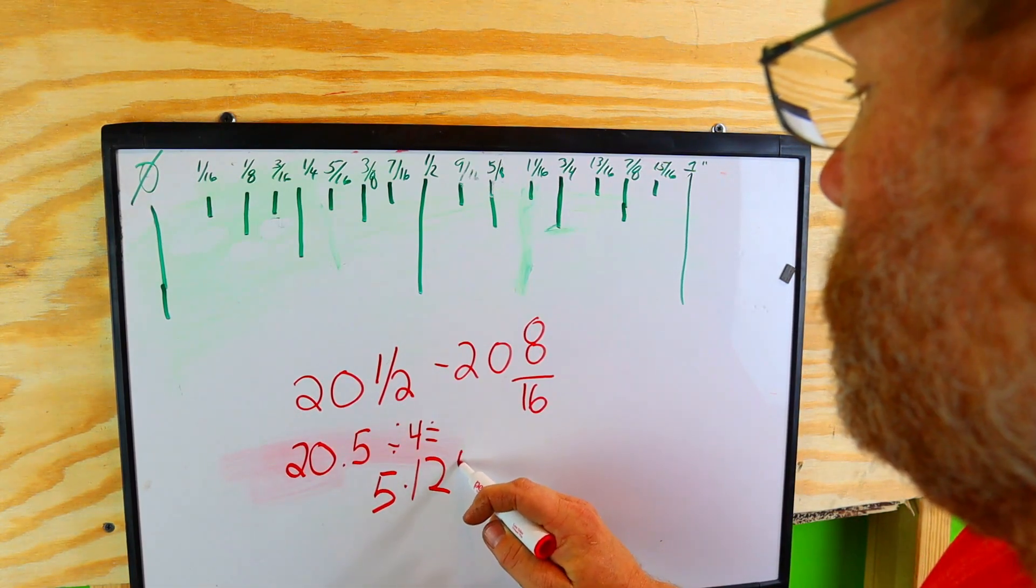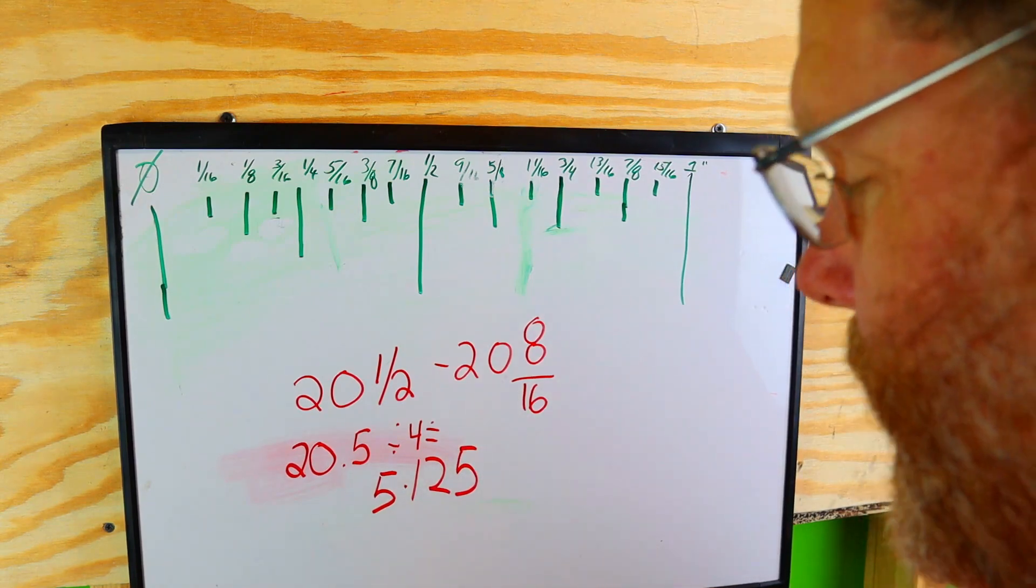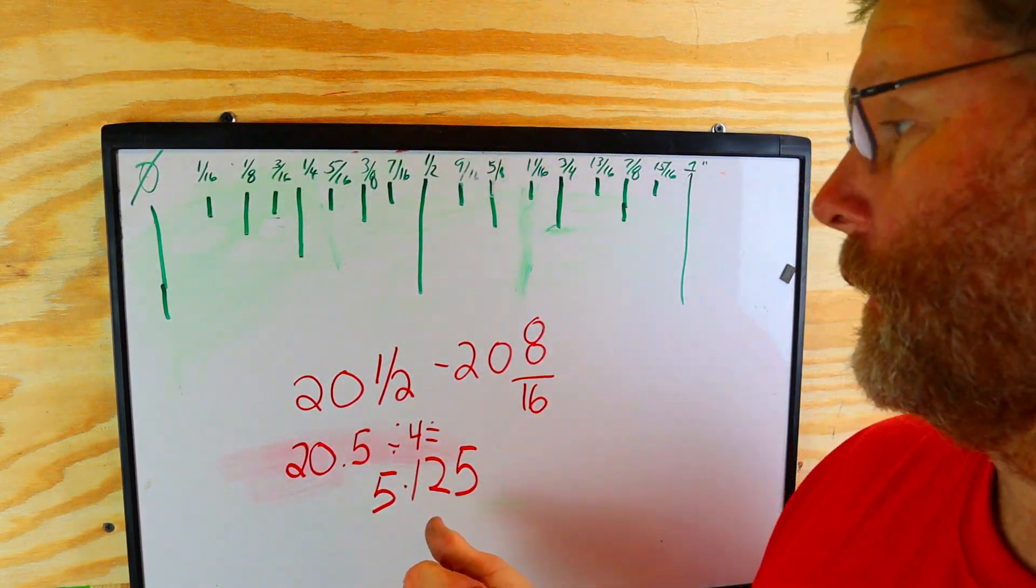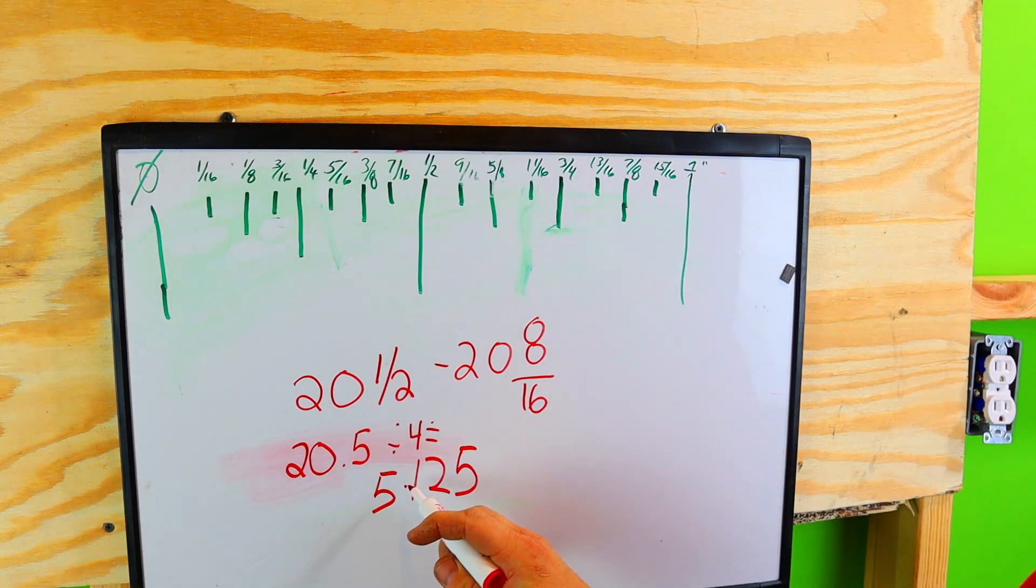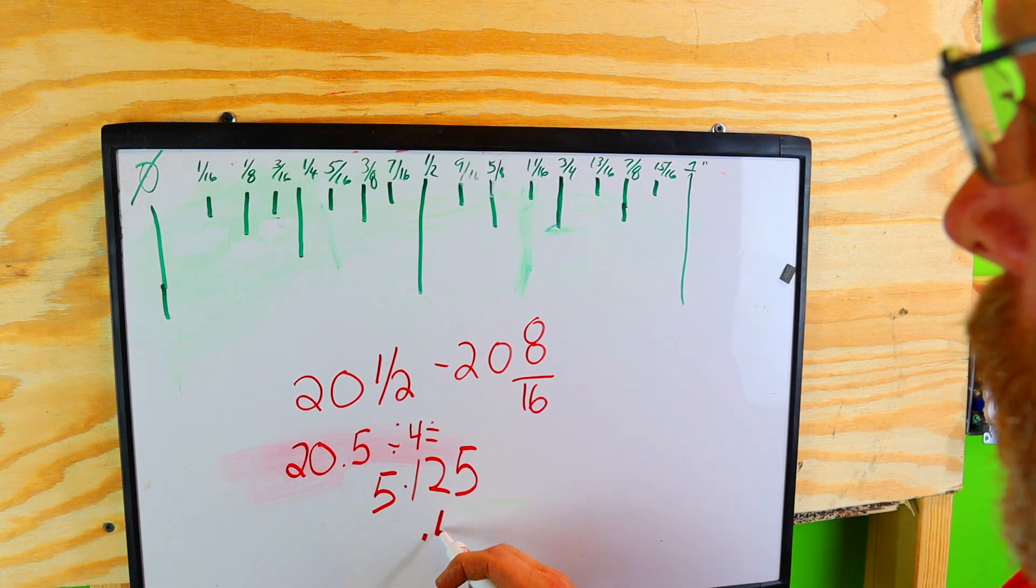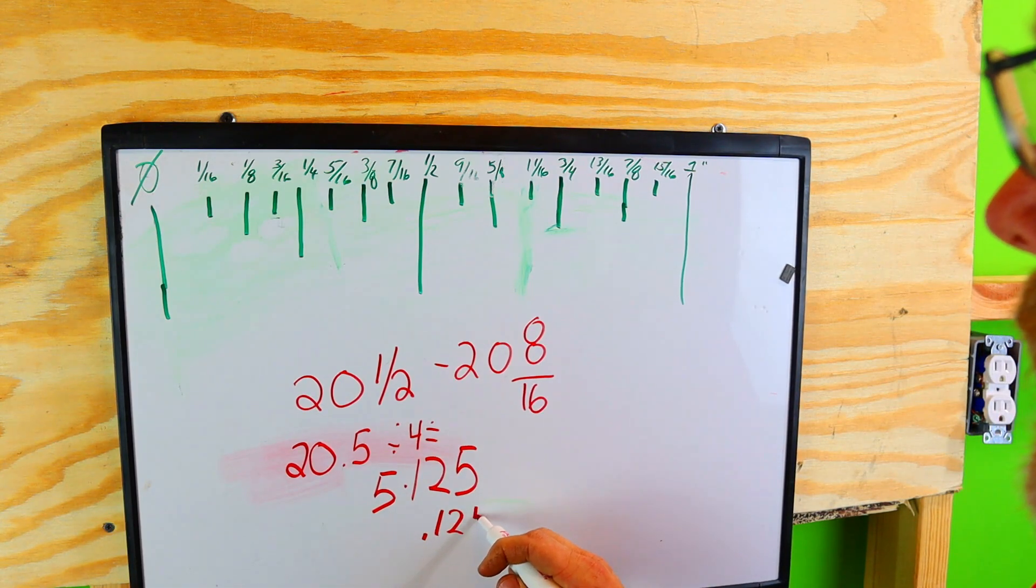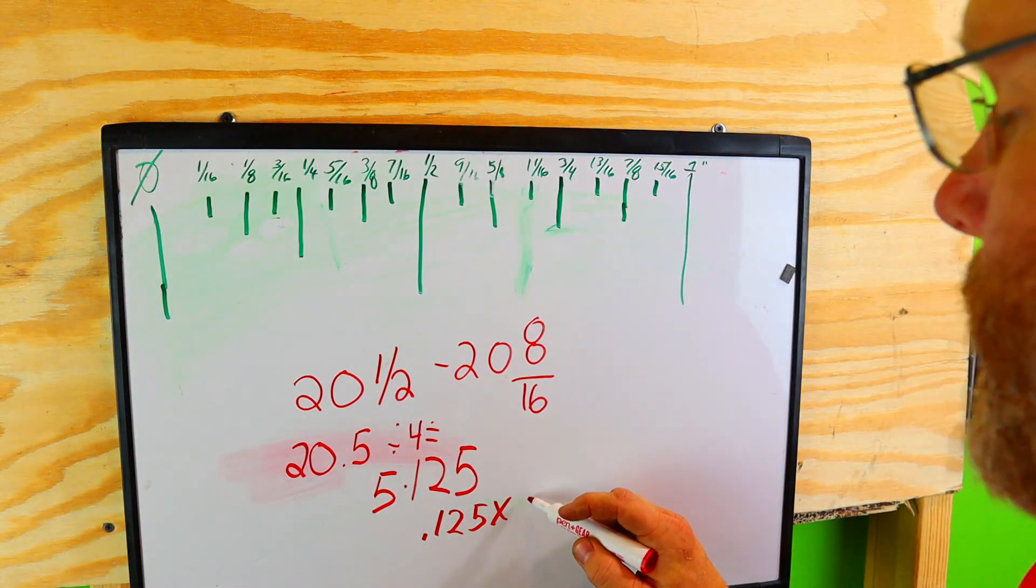Now we can't take this number right here and see it anywhere up there, right? So what we have to do is we have to take the 0.125. So we'll take 0.125 and you multiply it by 16.